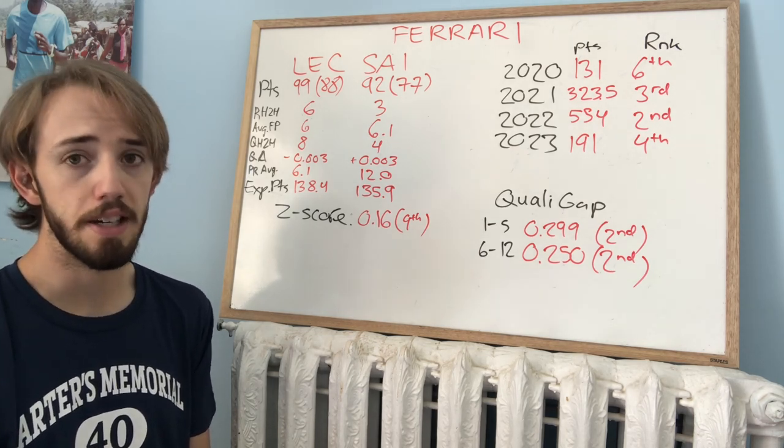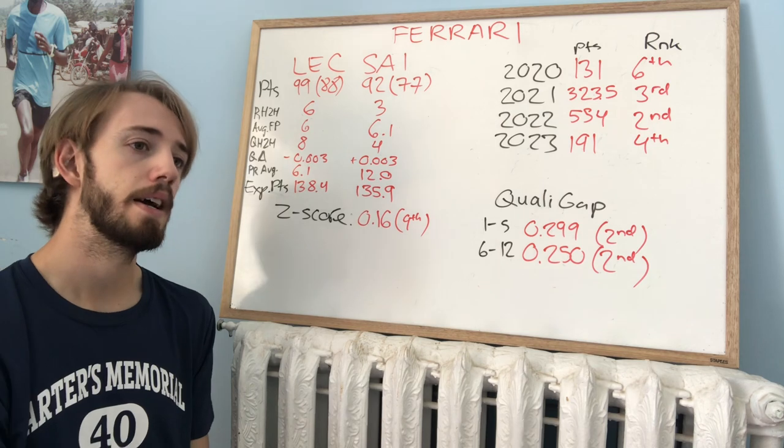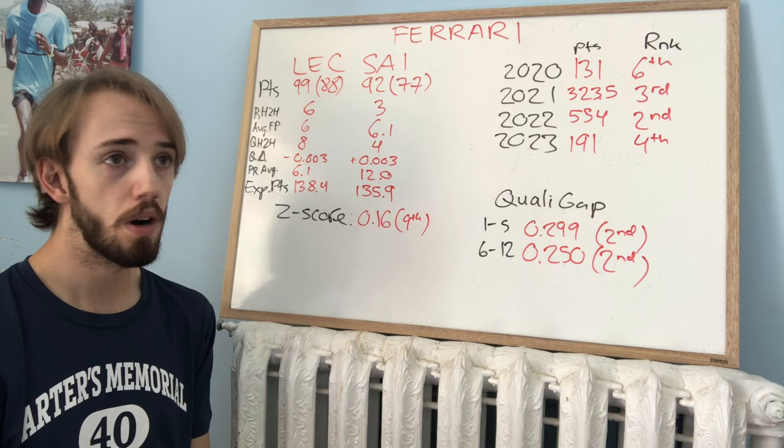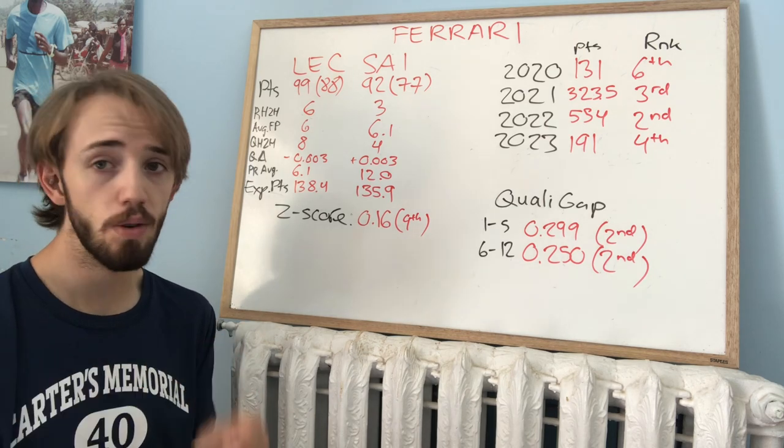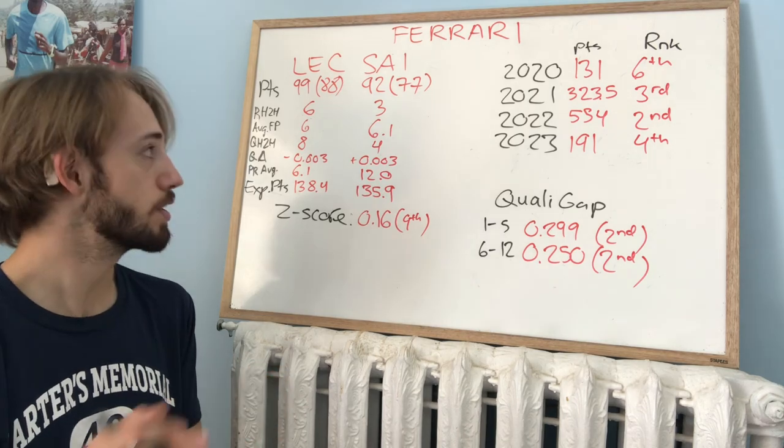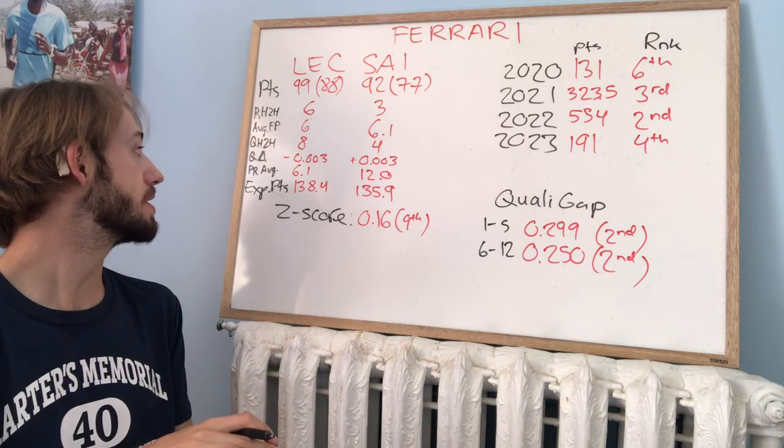For the most part, Leclerc has been ahead. But there have been a couple occasions where Sainz has outqualified him by a good margin. And while those races may be considered outliers, that being said, they're not massive outliers. So I did not remove them from the data set.